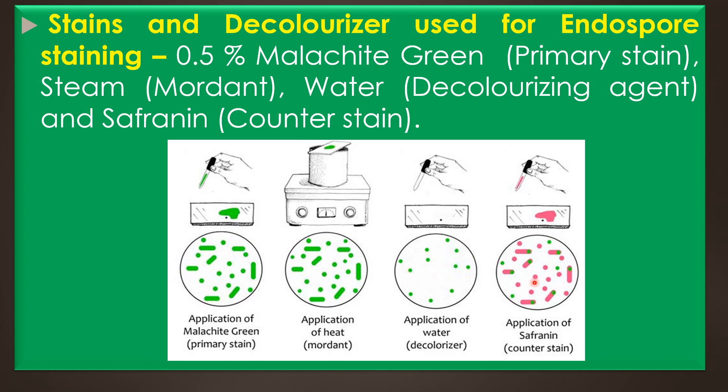Finally, the safranine counter stain is then applied to any of the cells which have been decolorized. At the end of the staining process, vegetative cells will be red and the endospores will be a dark green colored structure.